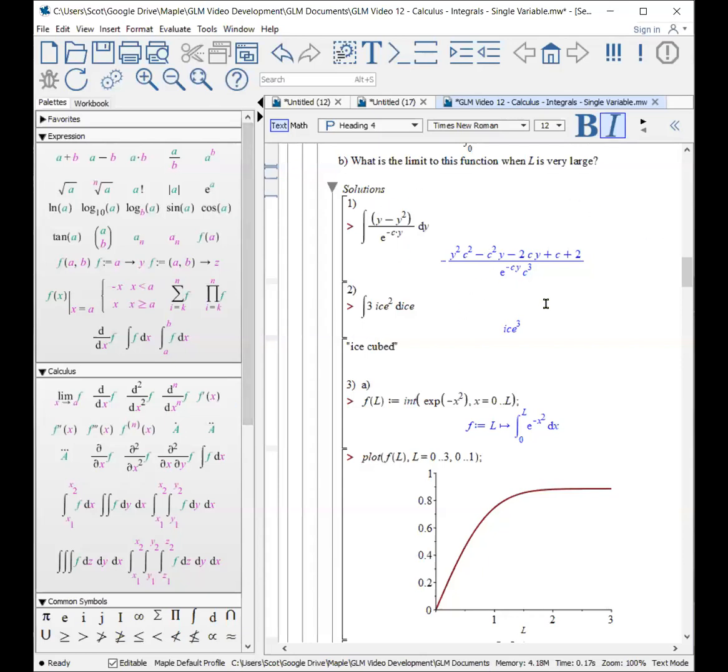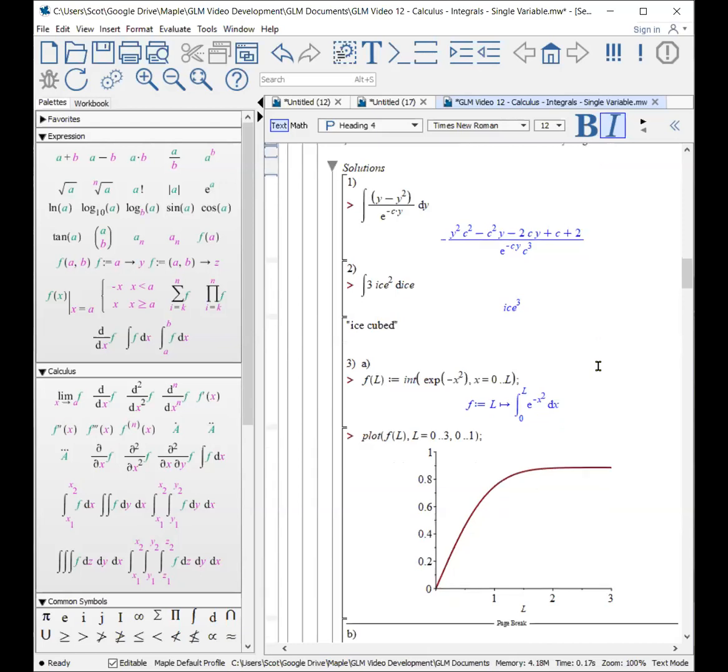And here are the solutions. This one should be straightforward, just typing it in. This one, again, is another, just type it all in. Like this, three i squared. The answer is i cubed. A little physics humor there.